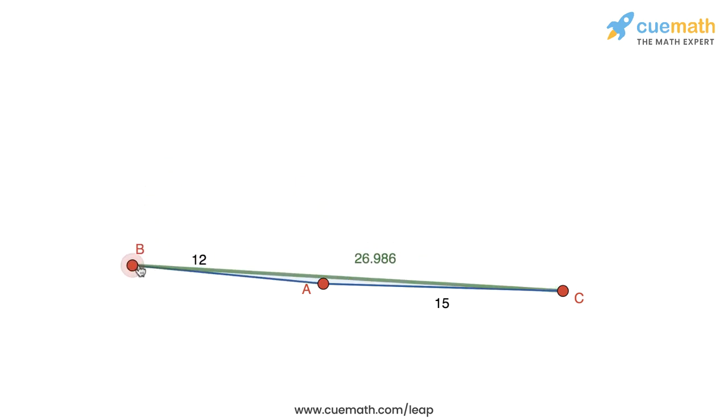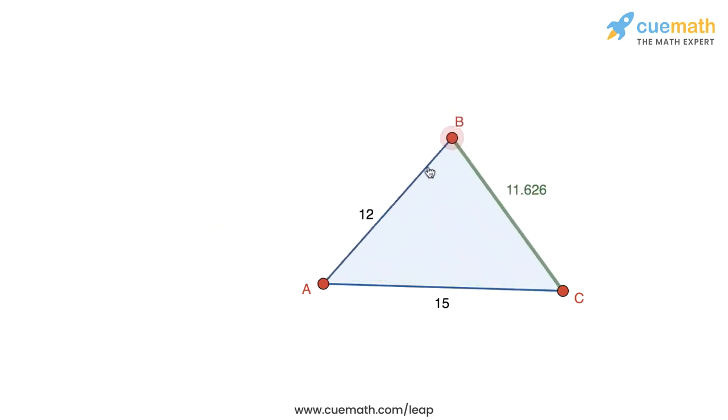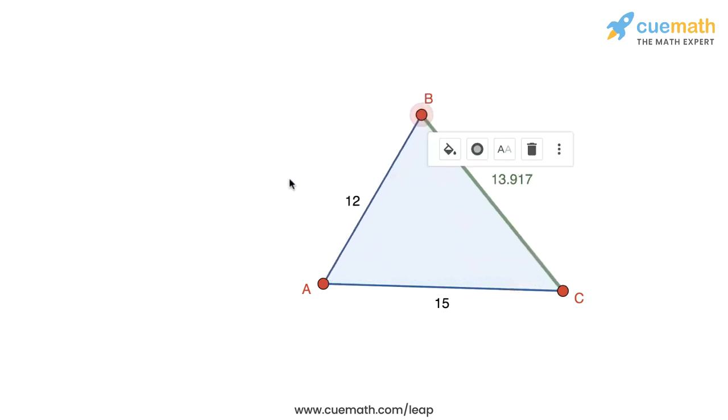We also observed that BC can go down to as low as 3 centimeters, but BC has to always stay slightly more than 3 centimeters. Therefore, we can conclude that BC can take any value between 3 centimeters and 27 centimeters.